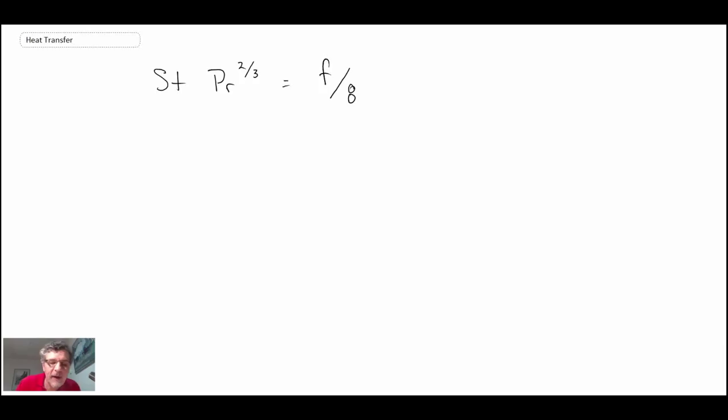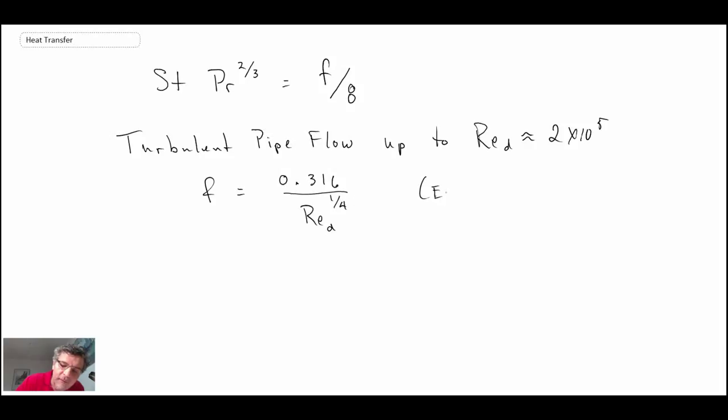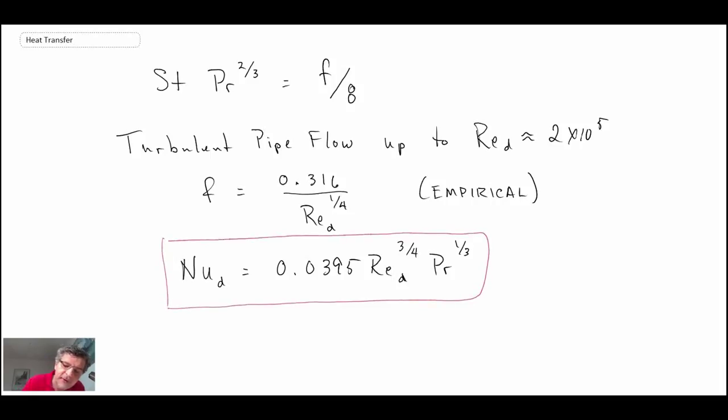So with that what we can do is we can find empirical relationships for the friction factor within pipe flow realizing that it is a function of the roughness of the pipe wall. So this is an empirical expression. And with that we can then come up with an expression for the Nusselt number based on diameter. Using nothing but the friction factor which is measured from the pressure drop in pipe flow, we can come up with an expression for the Nusselt number. So this is entirely based on fluid mechanic measurements and the Colburn analogy.